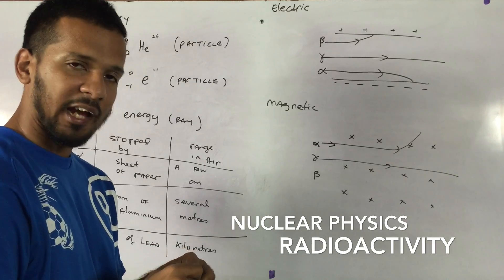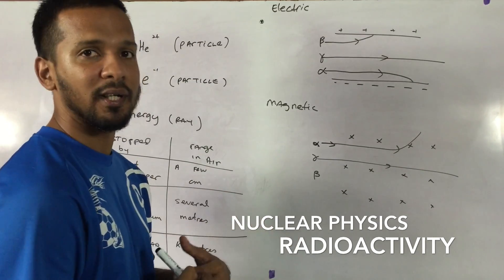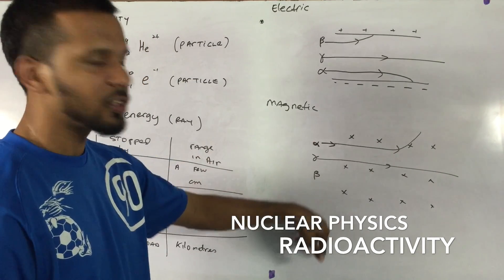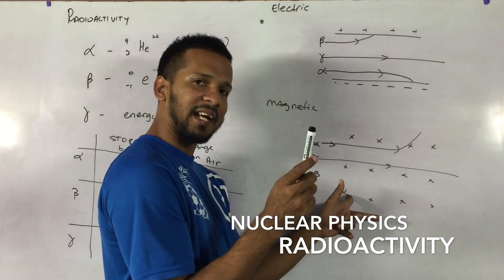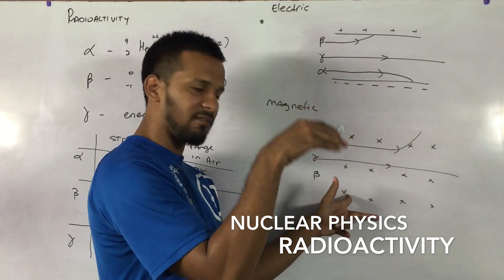We can do the same thing for the electron, but a good guess would be what? Opposite direction, shorter distance. Let's see if it works out. The magnetic field is this way. Beta is negative.